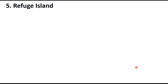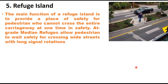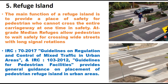The main function of a refuge island is to provide a place of safety for pedestrians who cannot cross the entire carriageway at one time because of the breadth of the road. At-grade medians allow pedestrians to wait safely for crossing wide streets with long signal rotation. The pedestrian refuge island allows a pedestrian to move from the footpath to the island in one stage, and then from the island to the opposite side in the second stage. IRC 70 and IRC 103 provide general guidance on placement of pedestrian refuge islands in urban areas.